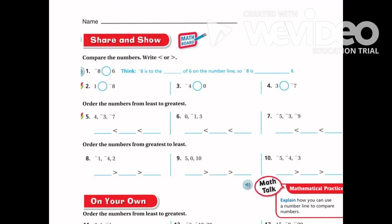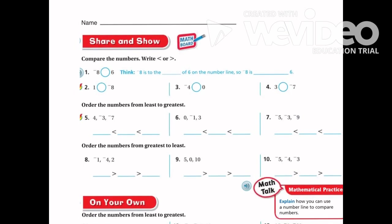Let's compare a few numbers in the Share and Show. I have negative 8 and positive 6. My 6 is to the right of zero and my negative 8 is to the left, so positive 6 is greater. Even though 8 is normally a bigger number, it's negative 8, on the other side of zero. Similarly, comparing 1 and negative 8, the positive number is greater than the negative number.